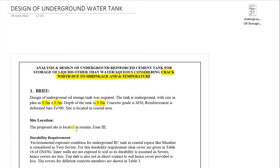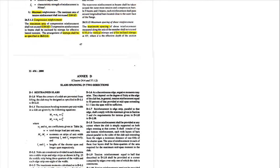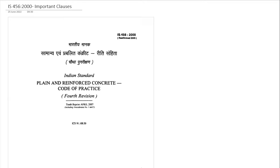The proposed site is located in seismic zone 3, but we are not going with seismic design. However, it is important to note this is a coastal area and an underground tank. So let's refer to IS 456 and check whether M30 is the minimum required grade of concrete. We will look at the durability requirements as per IS 456.